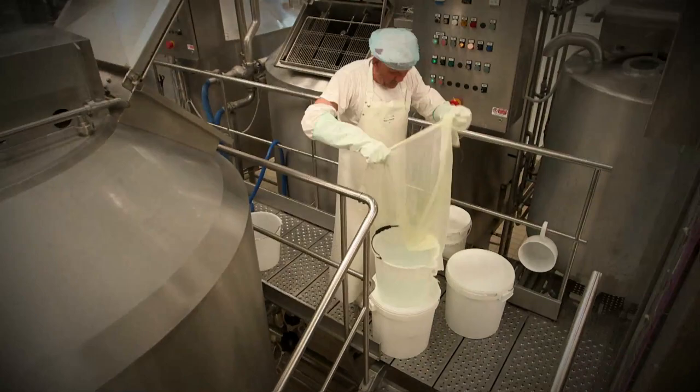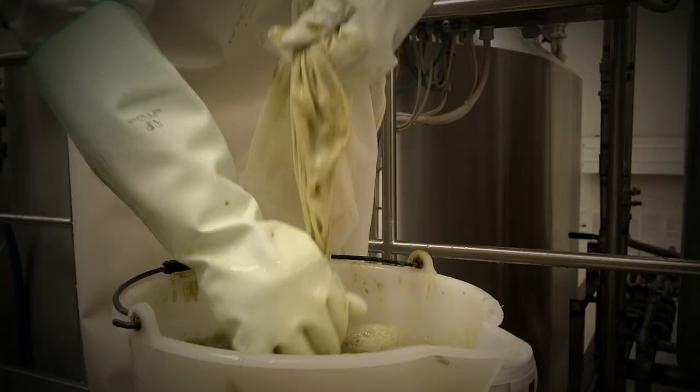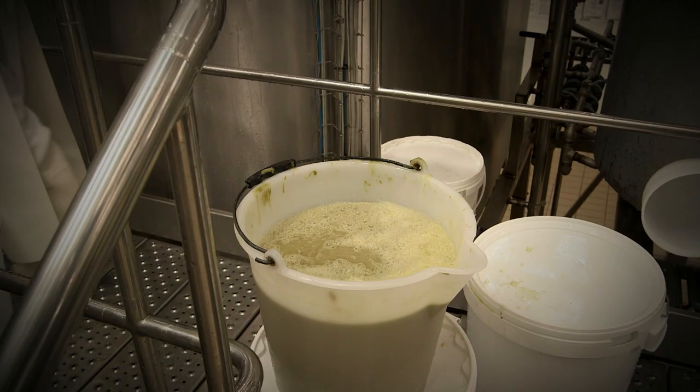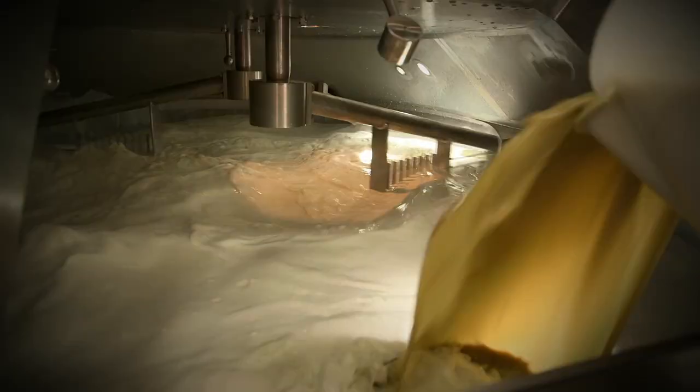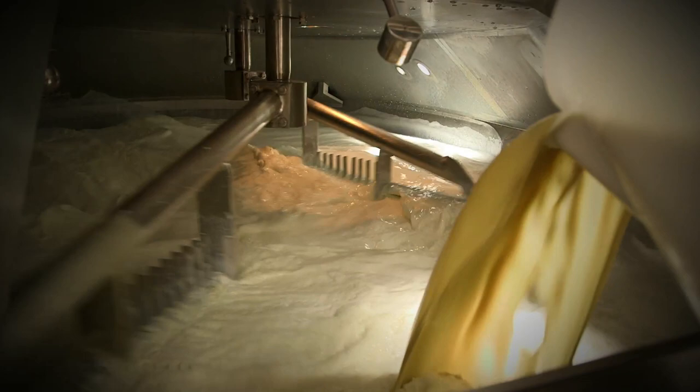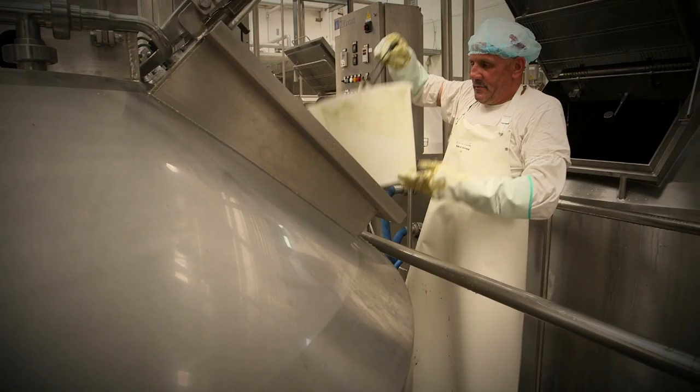The rennet comes from the stomach of unweaned lambs that are raised exclusively in the areas of production. It is used in quantities of between 35 and 40 grams per hectolitre of milk, but not before undergoing a process of salting, drying and lengthy seasoning. In this way, it acquires a very high level of bacteriological purity and optimal enzymatic concentration.